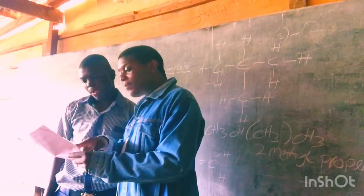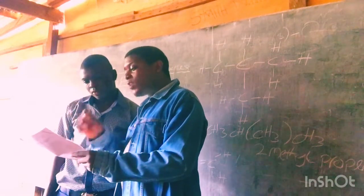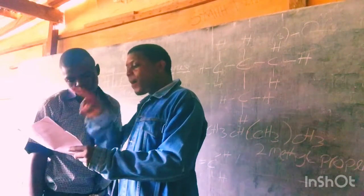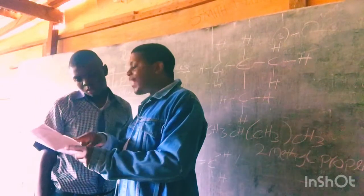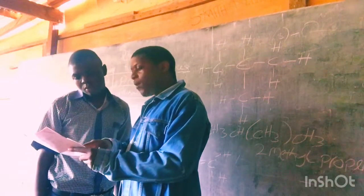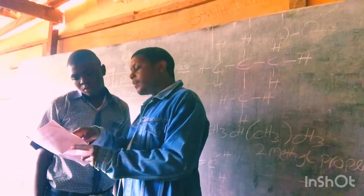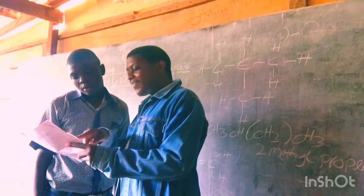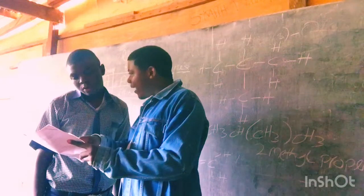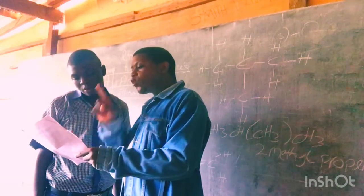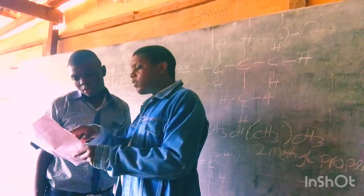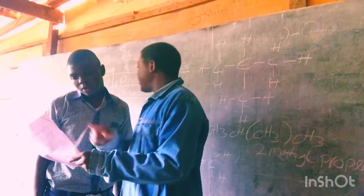Now they are asking you — they are continuing with the same question. The compound B exhibits isomerism. What was compound B? Butane, right? Now they say define isomerism. The next part: draw two isomers of the compound. What was B? Butane.